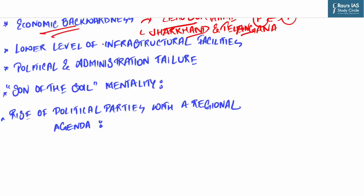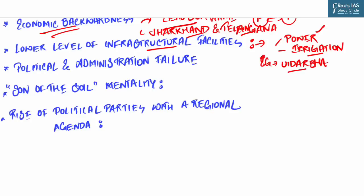Next is lower level of infrastructural facilities. Poor infrastructural development such as power distribution, irrigation facilities, roads, and modern markets for agricultural produce has been a backstory — for example, the Vidarbha region in Maharashtra. The next cause is political and administrative failure. This is a source of tension and gives birth to regional movements for separate statehood — for example, Jharkhand, Chhattisgarh, Uttarakhand, and recently Telangana. Even now, such demands can be heard from Vidarbha, Harit Pradesh in UP, and Kongu Nadu in Tamil Nadu.